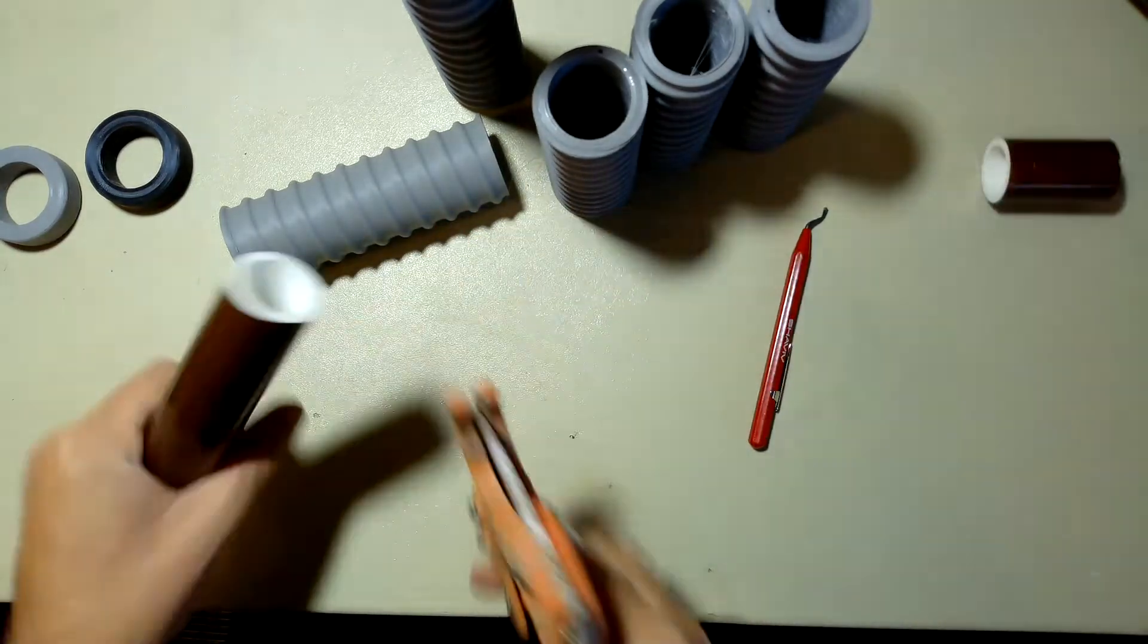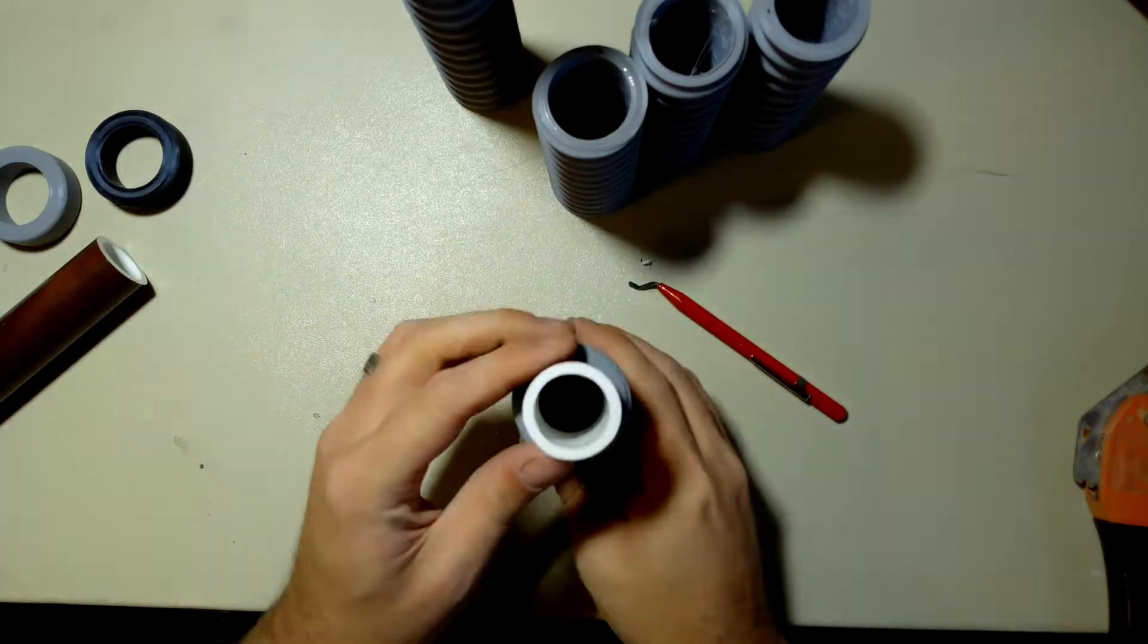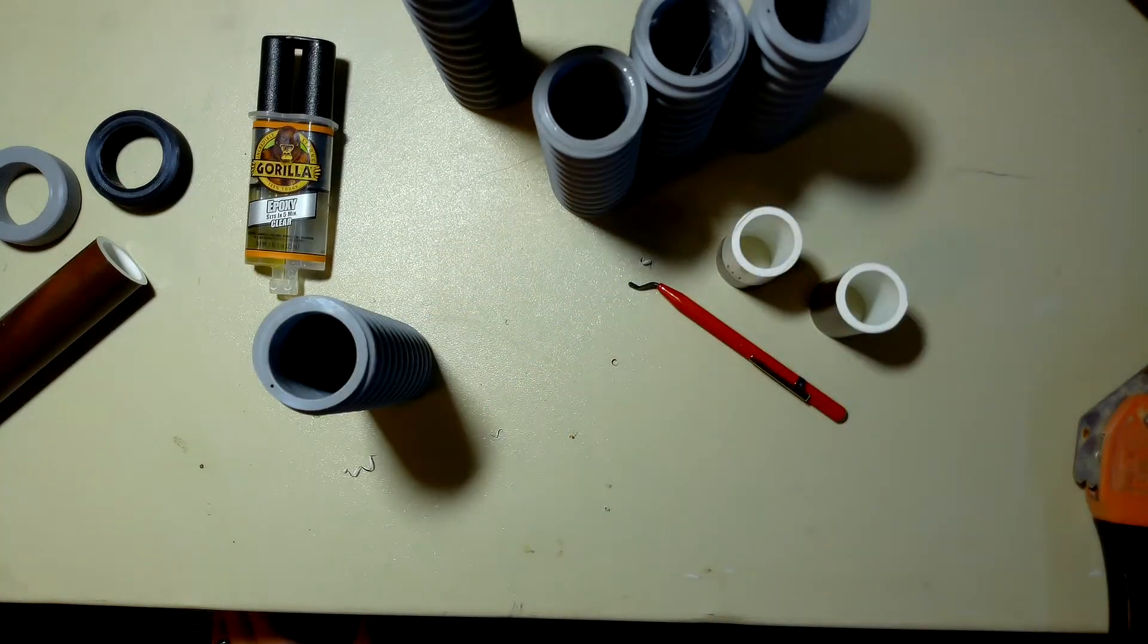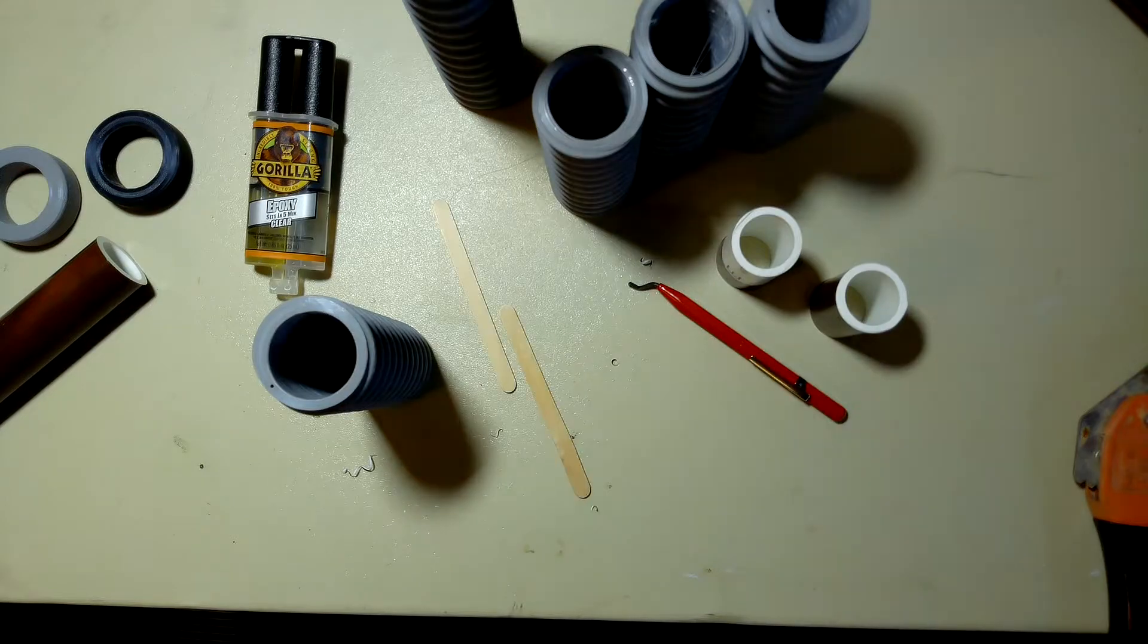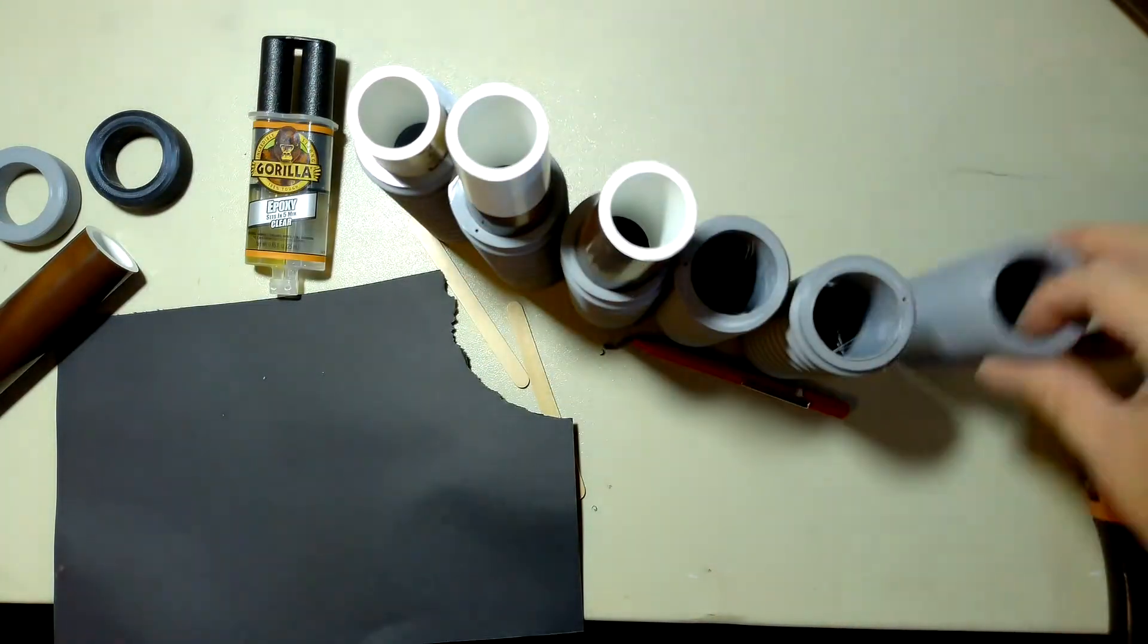Here I'm cutting up some PVC pipe and trimming it with my deburr tool. I'm going to glue everything together using two-part epoxy. It seems to work very well for me when I'm gluing 3D printed parts together.